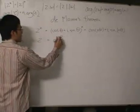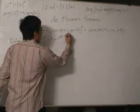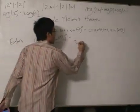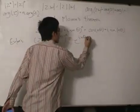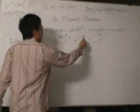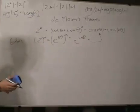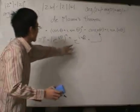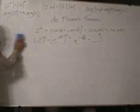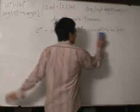If we take e to the i theta to the power of n, due to the law of indices, we can multiply the n with the theta to give us e to the i·n·theta. When we write it out, we get cosine n theta plus i sine n theta, because the argument of the number is now n theta. We also have Euler's formula inside here.